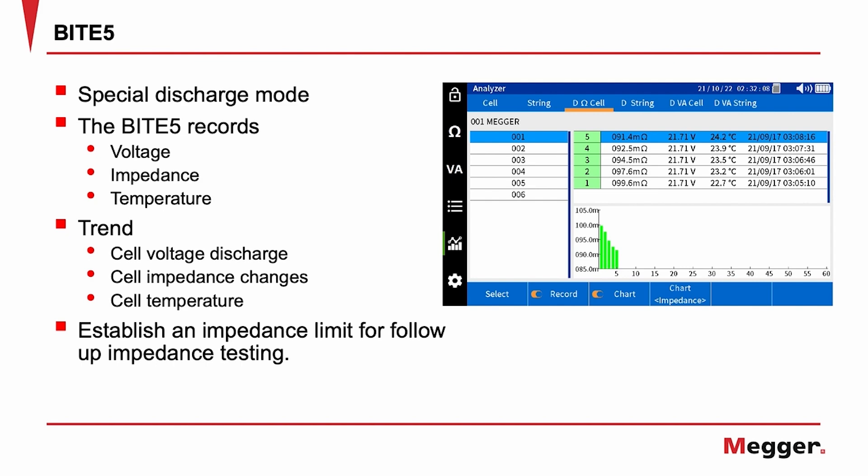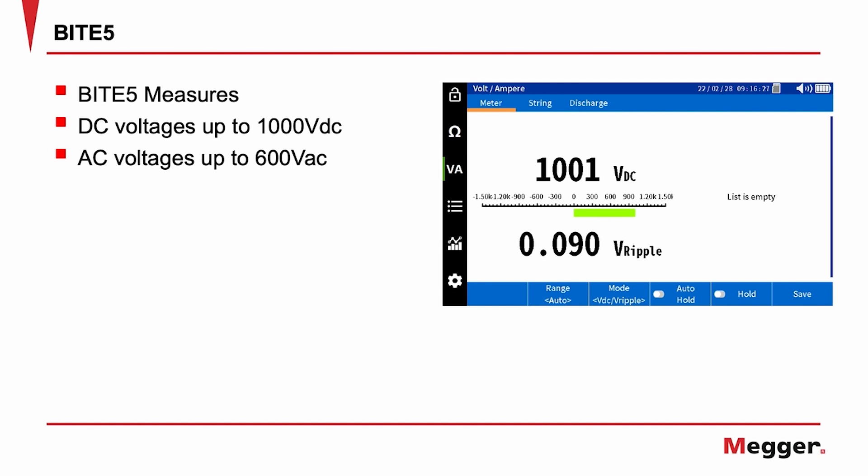The impedance value recorded during the discharge test can then help establish an impedance limit for follow-up impedance testing. The Byte 5 can also measure and record DC voltages up to 1000 volts DC and AC voltages up to 600 volts AC.